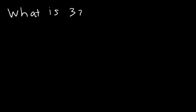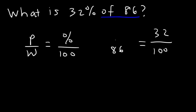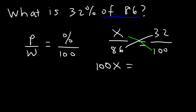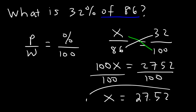The second thing we need to talk about is how to find the part. This question will illustrate it: What is 32% of 86? The percentage is 32, and the number associated with 'of' is 86 — that's the whole. We're looking for the part, which we replace with X. Cross-multiplying gives us 100X equals 86 times 32, which is 2752. Dividing by 100, we get 27.52. So 27.52 is 32% of 86.